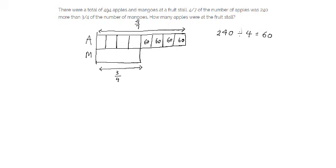I know that this represents 3 quarters of the mangoes, so I cut it into 3 parts: 1, 2, 3. Now the number of apples here and the number of mangoes here must be the same, however they are represented by different numbers of units — 4 units for apples and 3 units for mangoes — so I must make them equal.